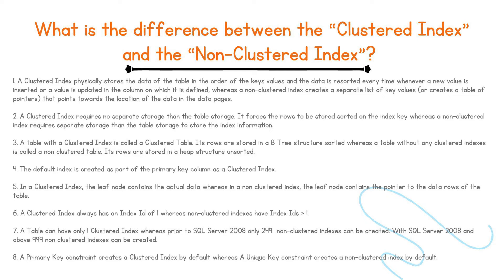Four: the default index is created as part of the primary key column as a clustered index. Five: in a clustered index, the leaf node contains the actual data, whereas in a non-clustered index, the leaf node contains the pointer to the data rows of the table.